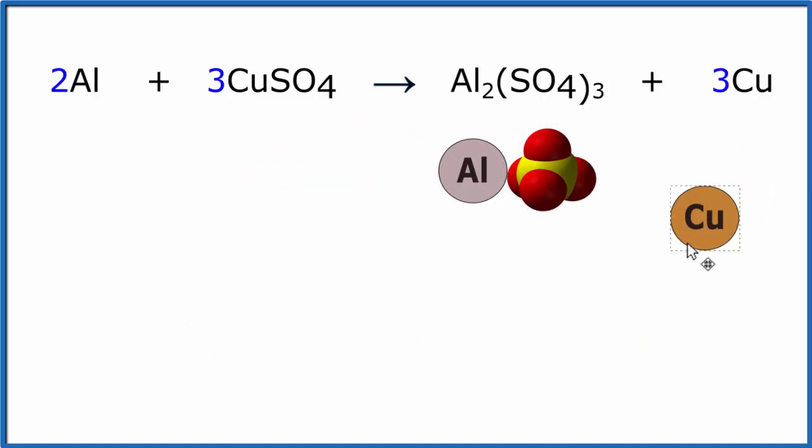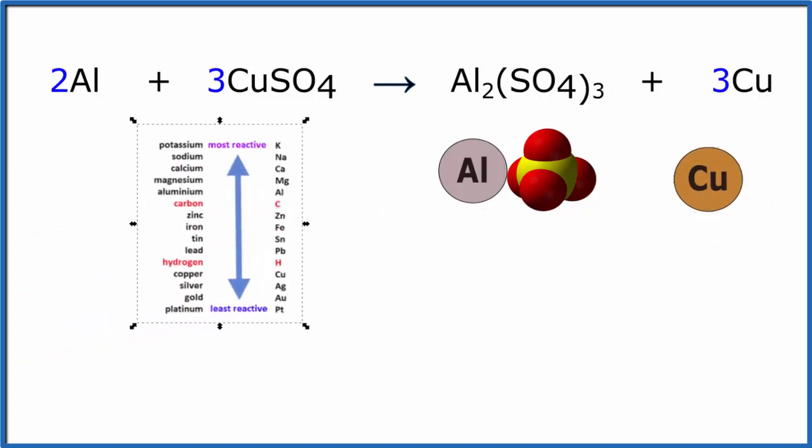You might ask, why doesn't the copper just come and displace the aluminum? We can look at the activity series of the metals and see why it doesn't do that. Here's copper down here, and here's aluminum.